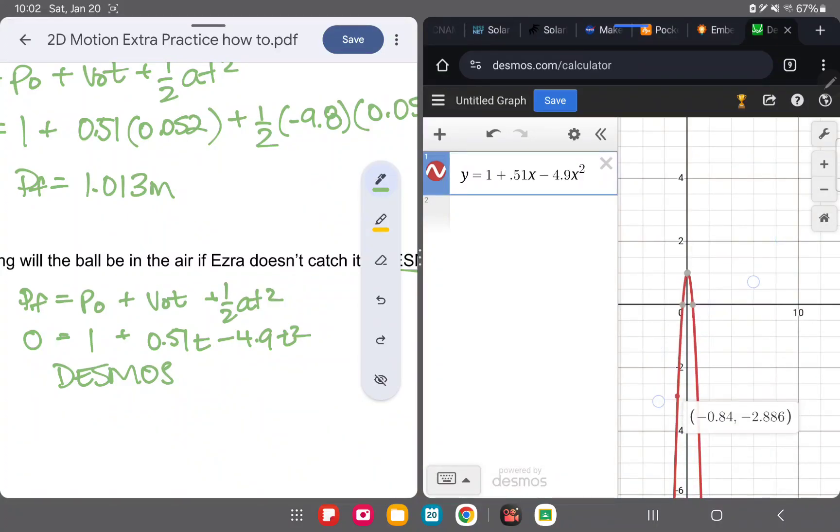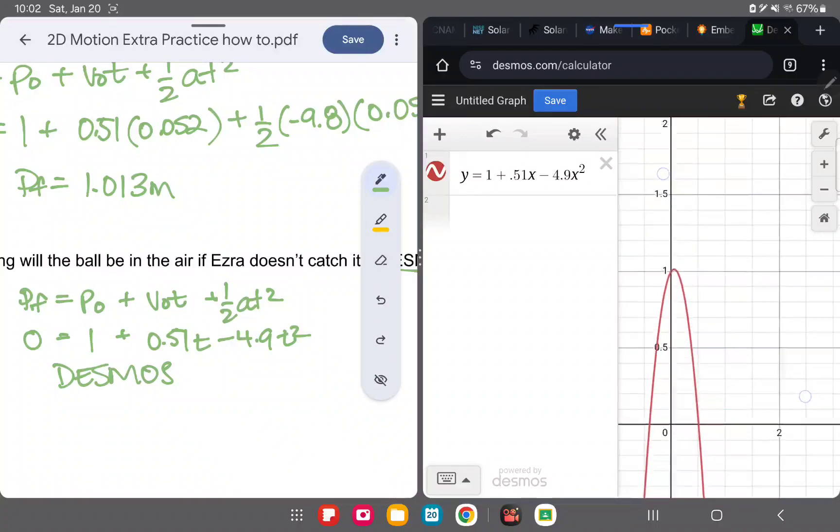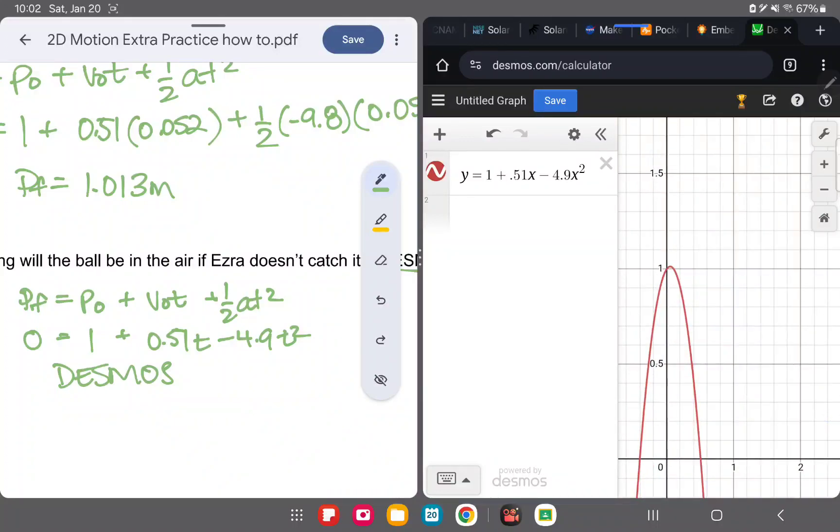Zoom. So we're not standing very far apart, but it's maximum. We double check. Our answer was 1.013. That is what we got over here. And over here is how long it'll be in the air if Ezra doesn't catch it. So 0.507 seconds, so half a second. So time is equal to 0.507 seconds. Not too bad. Thank you, Desmos.